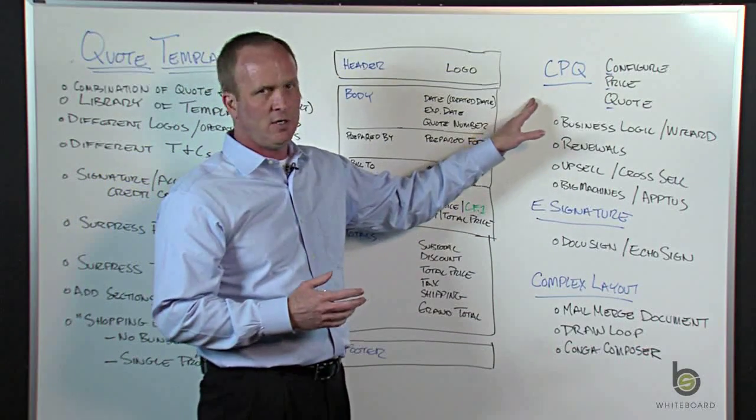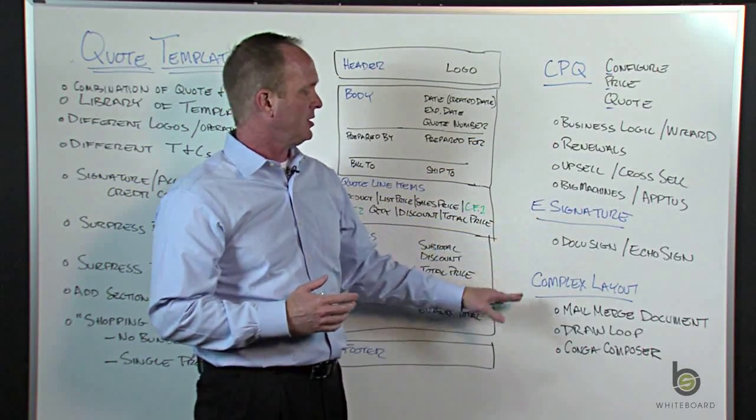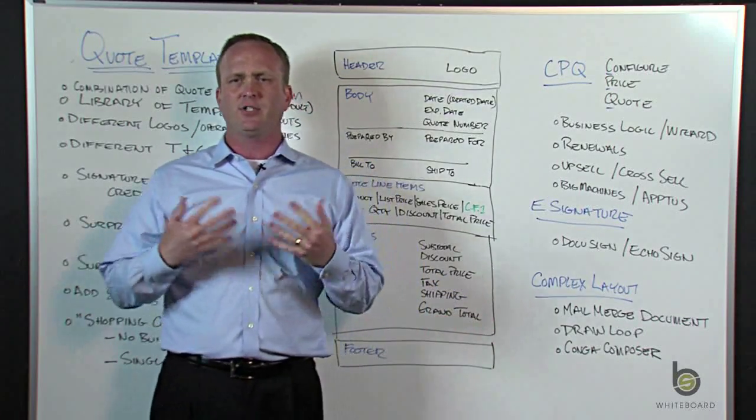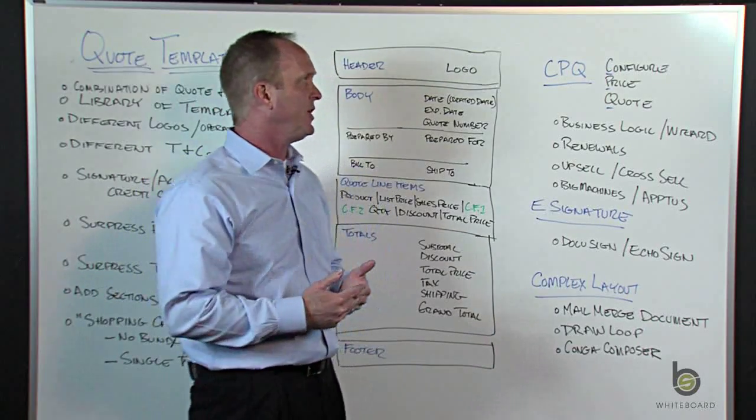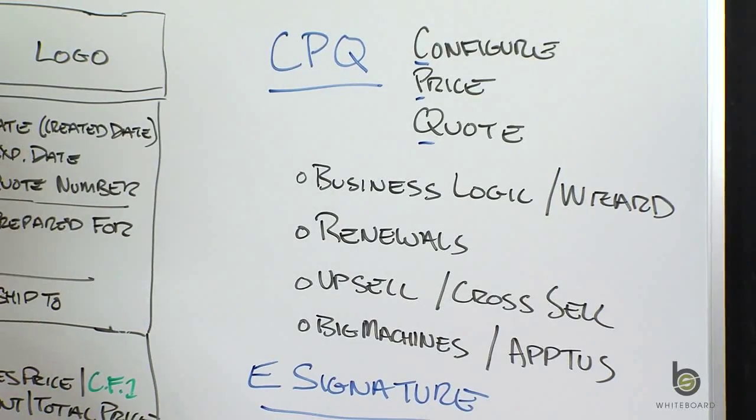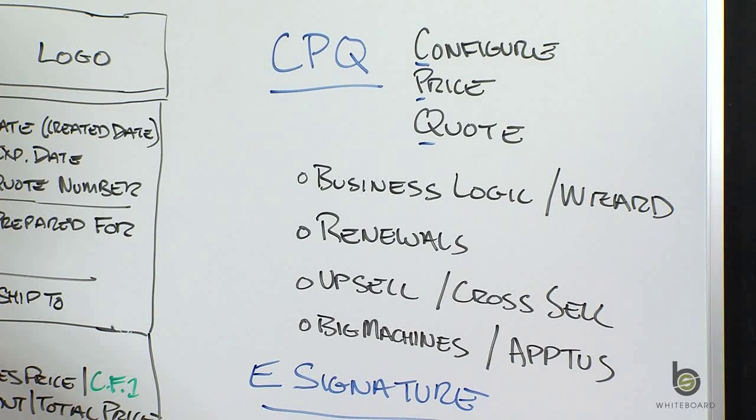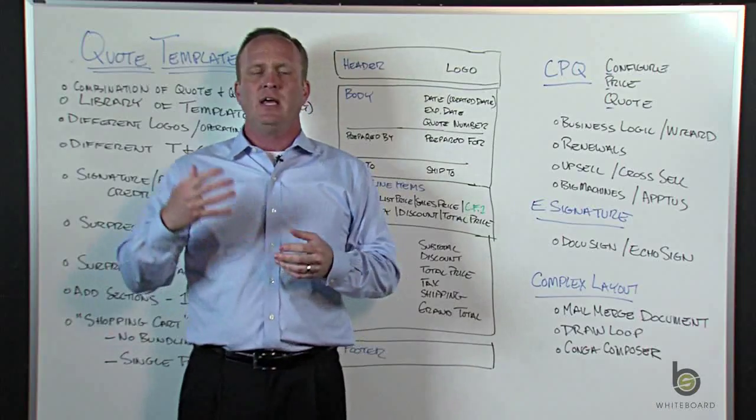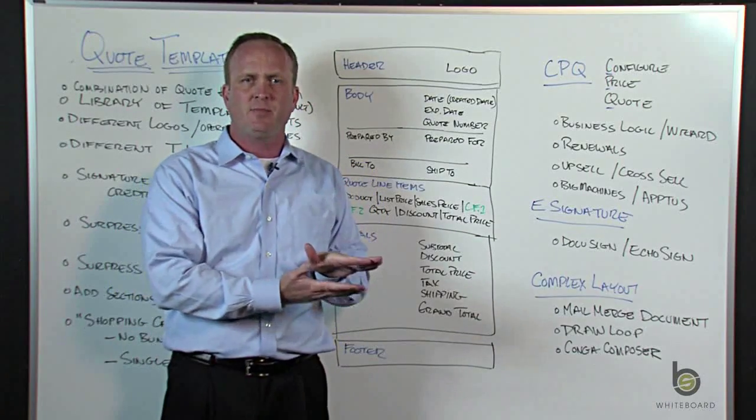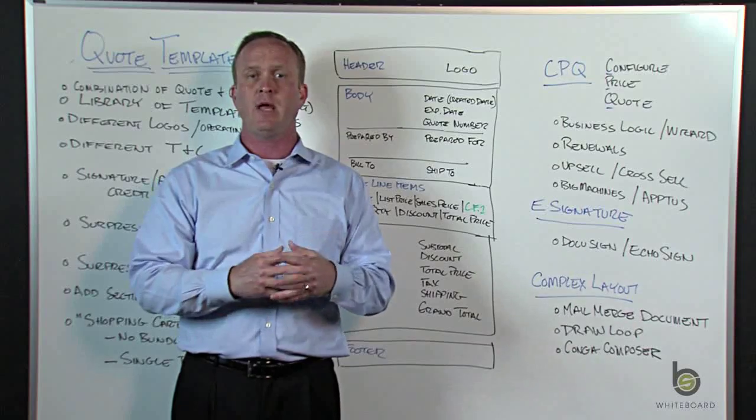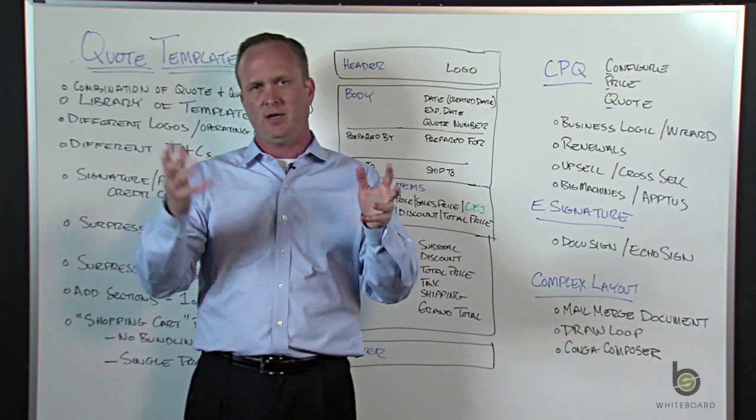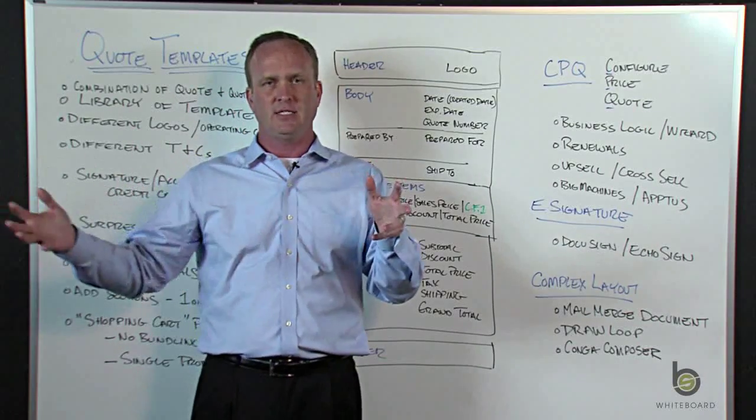I want to touch basically on CPQ, e-signature, and what I'm going to call complex layout. So CPQ, there's some third-party apps out there, and what CPQ stands for is configure, price, quote. So think the quote module on steroids. There's some things that you can't do natively with the Salesforce quote module. So you can't have business logics or business rules. Think about if I sell this product, I must have these products. I can't sell this product and this product together. Or maybe some guided sales process where I go through a wizard, and it tells me if I put this component, then here are my other components that go with that. Like a configurator.